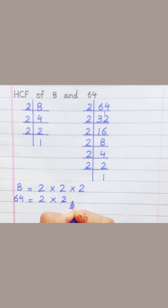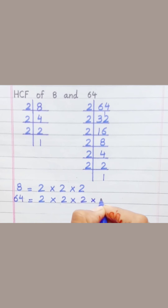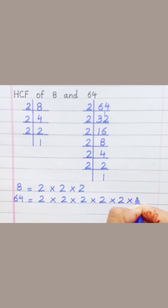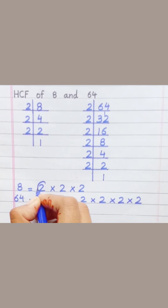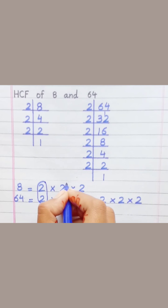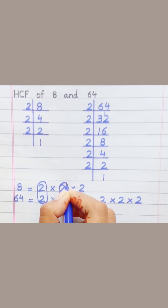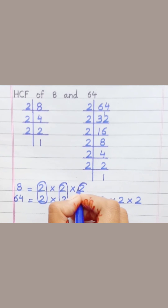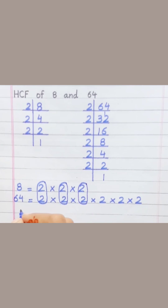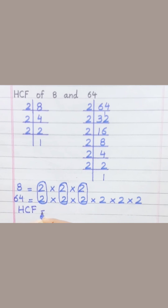Loop the common prime factors among both. HCF equals 2 × 2 × 2 = 8.